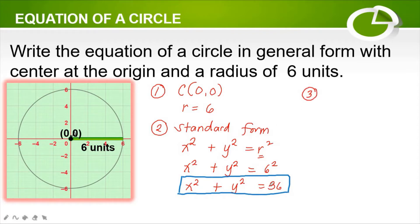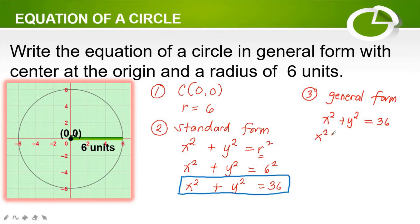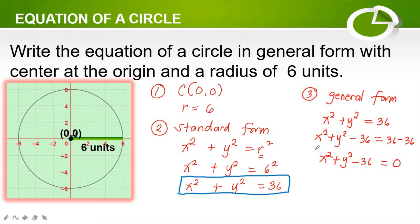Third step: from the standard form in step 2, we are going to rewrite it in general form. Our equation is x squared plus y squared is equal to 36. Subtracting 36 from both sides of the equation, we get x squared plus y squared minus 36 is equal to 36 minus 36, which simplifies to x squared plus y squared minus 36 is equal to 0. This is the general form of the equation of the circle with center at the origin and a radius of 6 units.